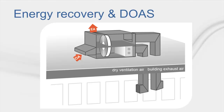Now that we've covered how to configure DOAs in TRACE, the DOA unit may include an energy recovery device such as a total energy wheel that conditions outdoor air prior to entering the coils. The wheel preconditions the outdoor air by exchanging both sensible and latent heat with the exhaust air. In heating mode, the wheel warms and humidifies the outdoor air; during cooling mode, the wheel cools and dehumidifies the outdoor air.